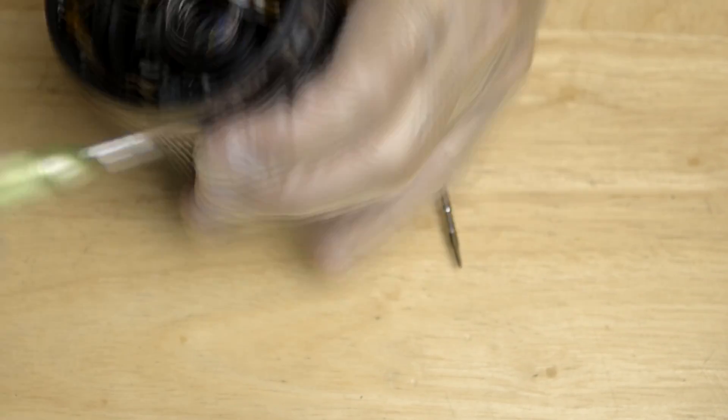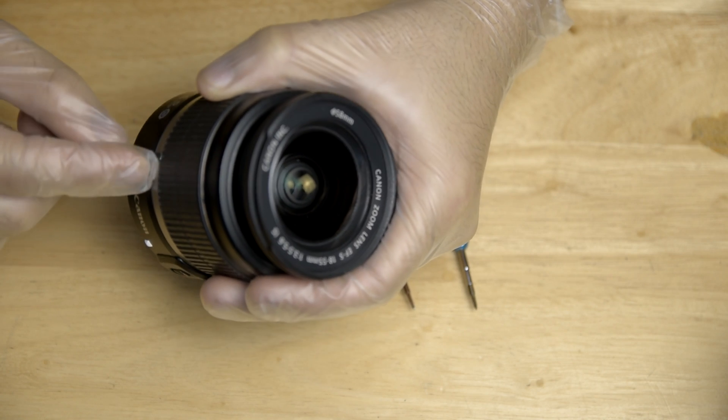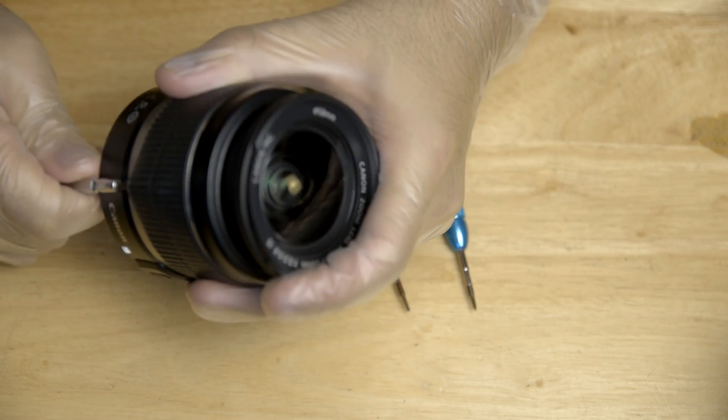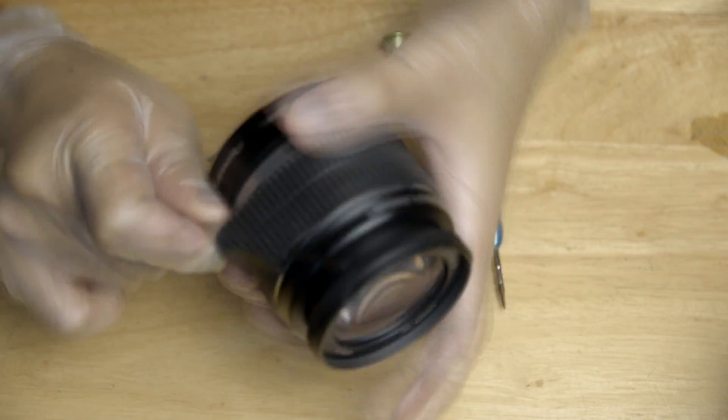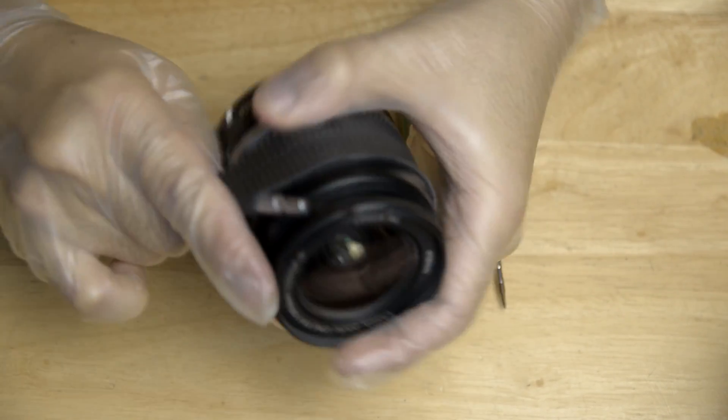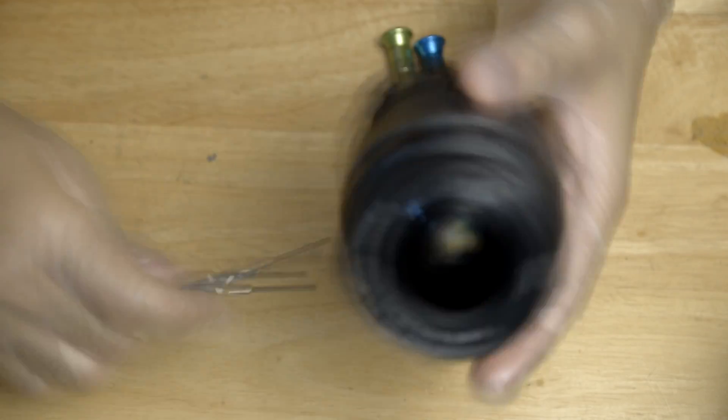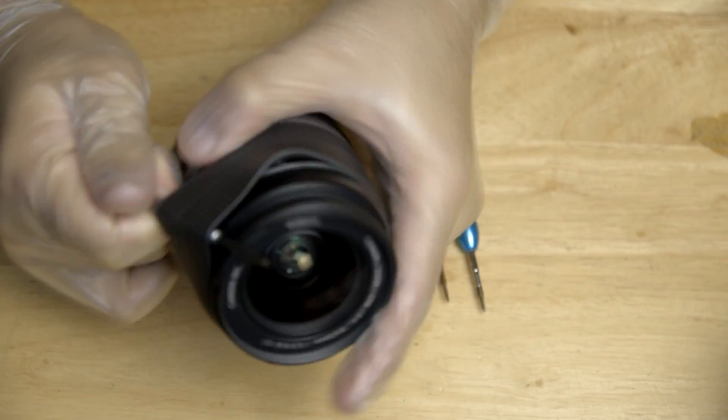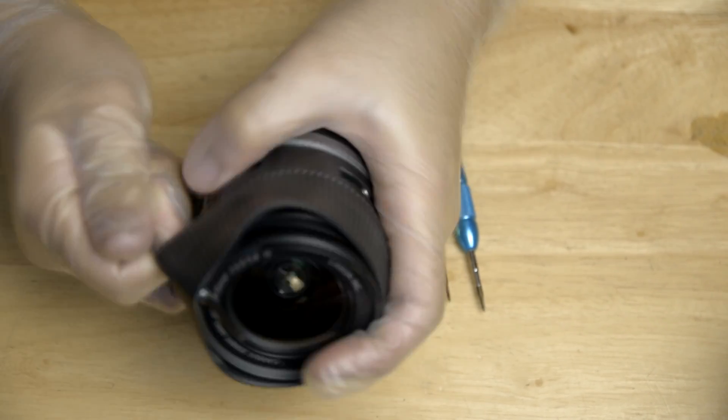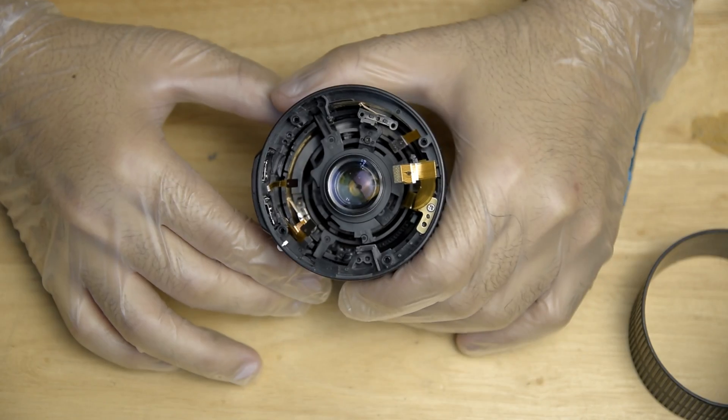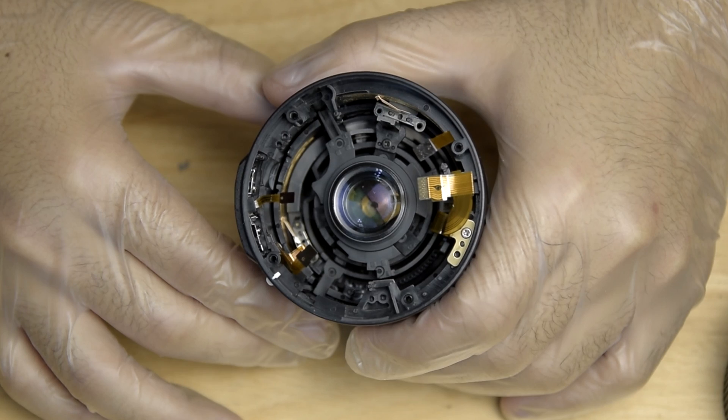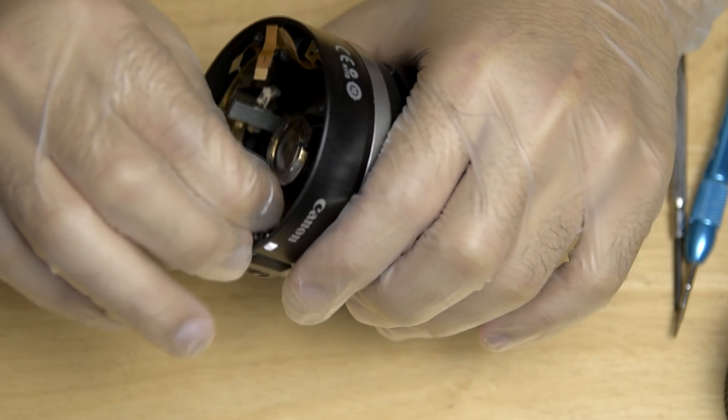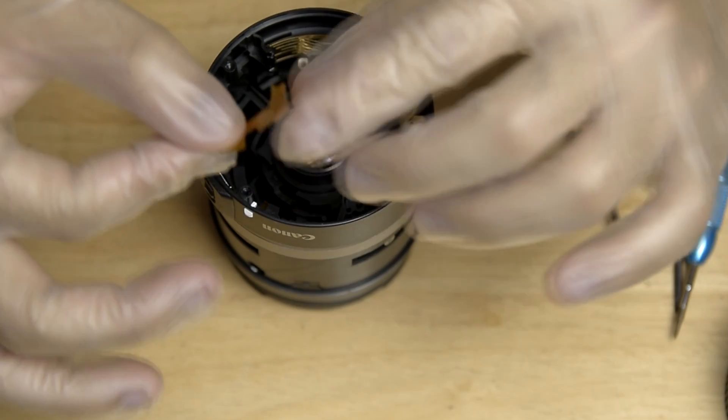And then you can also remove the zoom rubber to access the screws hidden underneath the rubber. So I just removed the broken flex cable, as you can see here.